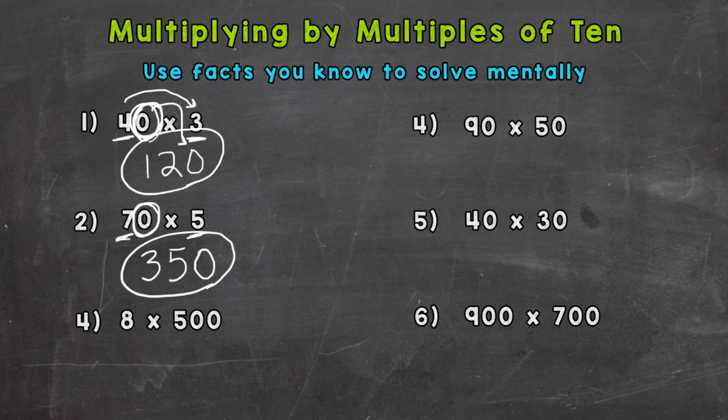Number four, we have 8 times 500. So we have a nice fact here: 8 times 5, which is 40. Now let's look back at the original problem. We have one, two zeros to put on the end of 40: 1, 2, to push the original 4 and 0 from our fact to the right place value. So we get 4000.